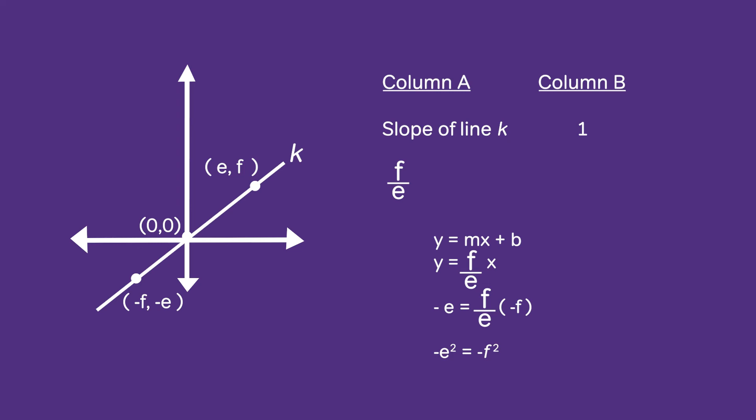Now since this point (e, f) lies in the first quadrant we know that e and f are both positive. From this we can conclude that e must equal f.